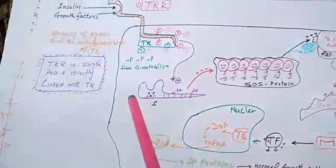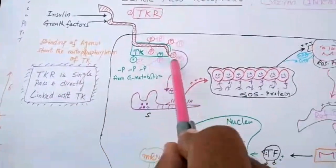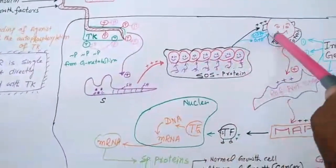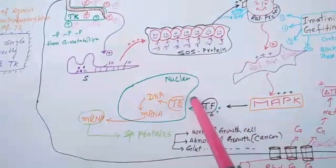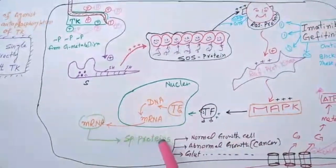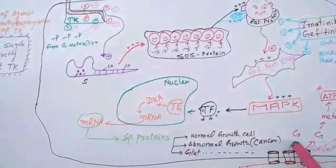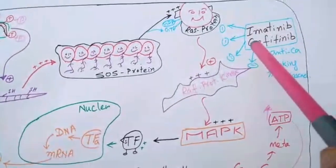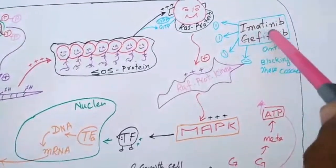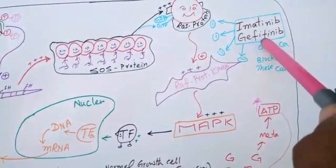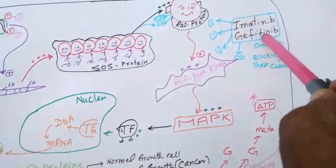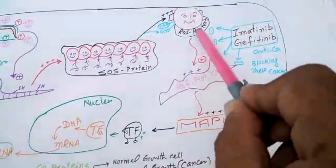If some agonist binds here which are carcinogenic, after this intracellular cascade, abnormal proteins cause cancer. We have some drugs, Erlotinib and Gefitinib. These anti-cancer drugs block these cascades.